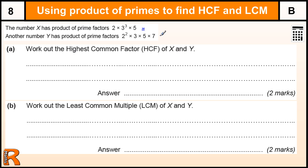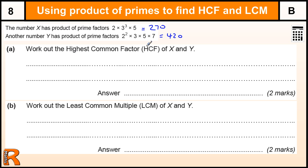A lot of people will be unhappy with using the product of primes method and will go to the numbers and try to figure out the highest common factor using a calculator. But it is actually much quicker and easier to work it out just by using the products of primes.